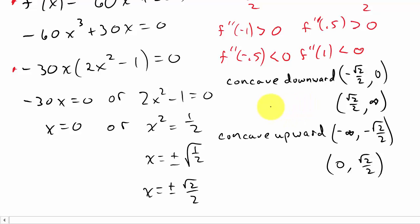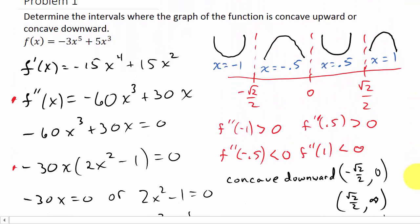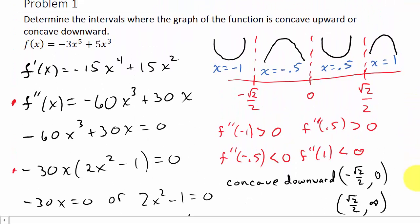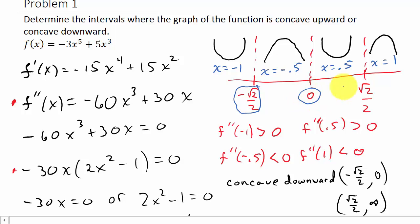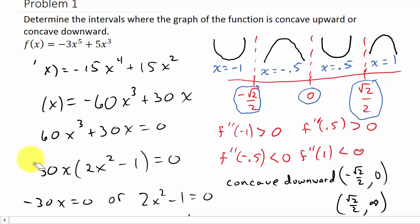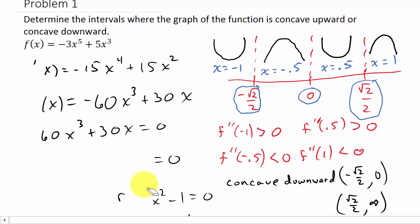Now let's find the inflection points. An inflection point is where the graph changes concavity. You can see it changes concavity at negative square root of 2 over 2, at 0, and at square root of 2 over 2, so we're going to have three inflection points.